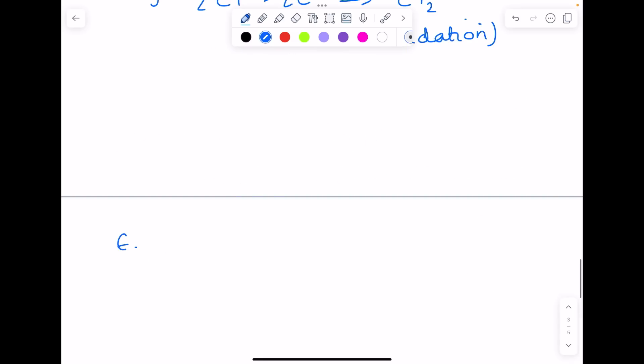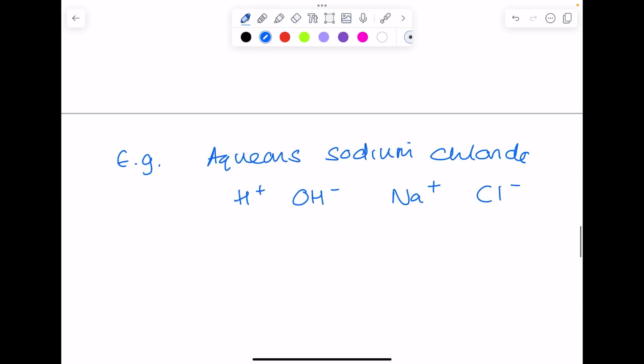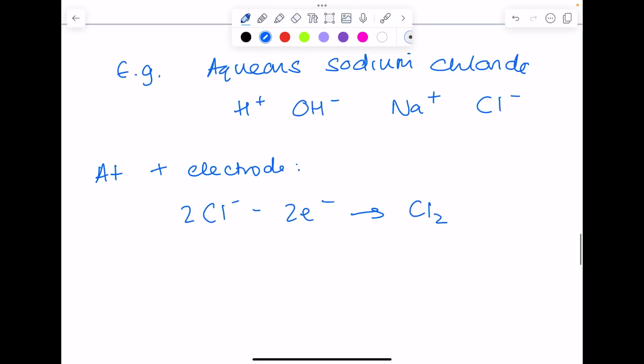If you're asked about an aqueous substance such as aqueous sodium chloride, it becomes more difficult because we have lots of ions present in solution. We have H+ and OH- indicated by aqueous, then sodium and chloride ions. So at that positive electrode, at the anode, you have to pick between these two ions and it will always be the halogen which is attracted preferentially. So again that's the equation we need here. That's oxidation.